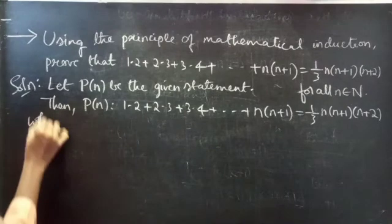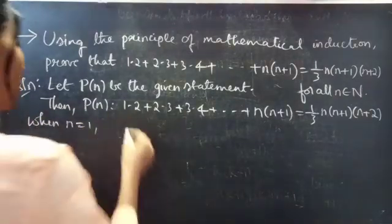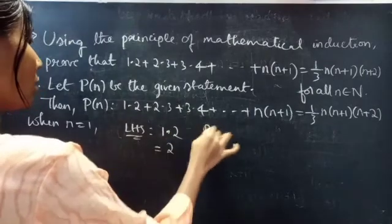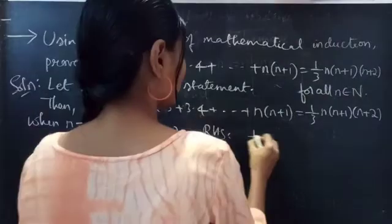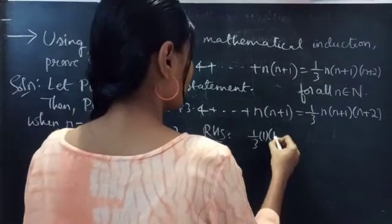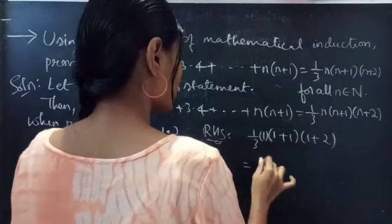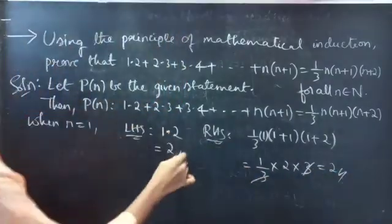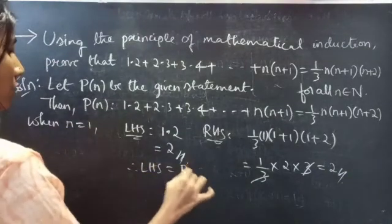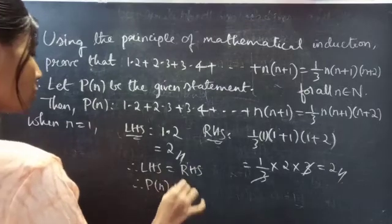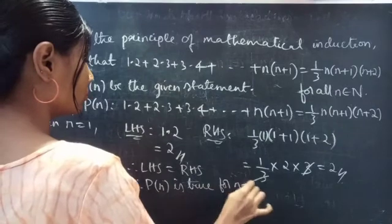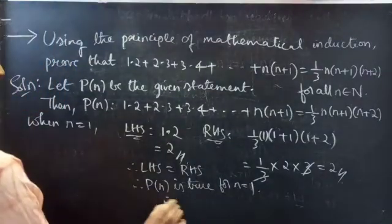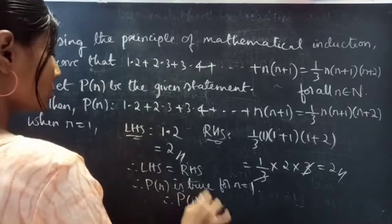When n=1, for LHS take only the first term since n=1, so 1·2 = 2. For RHS, put n=1: (1/3)·1·(1+1)·(1+2) = (1/3)·1·2·3 = 2. So LHS equals RHS. Therefore P(1) is true.